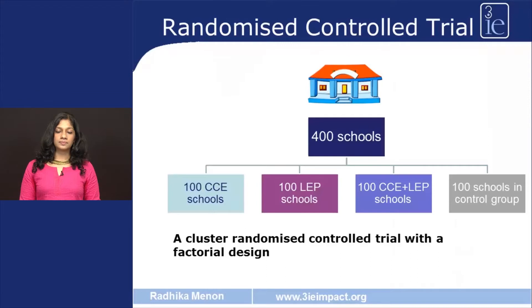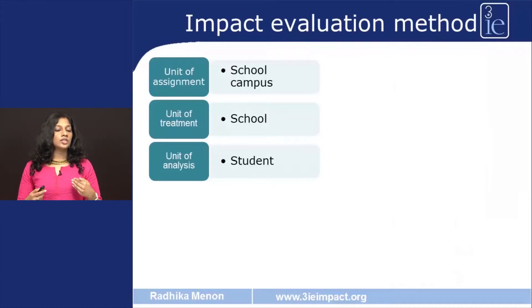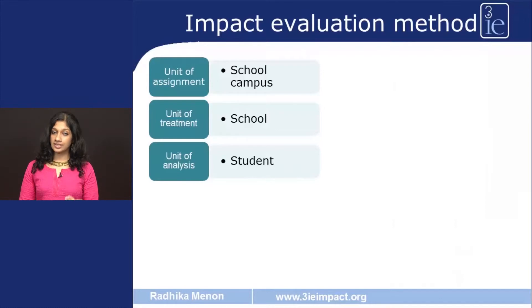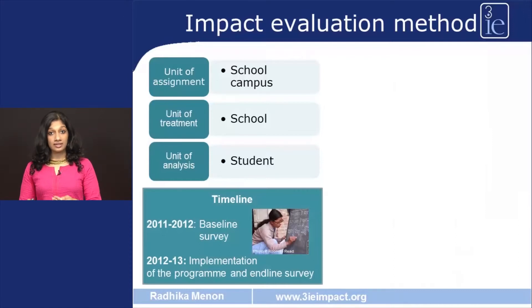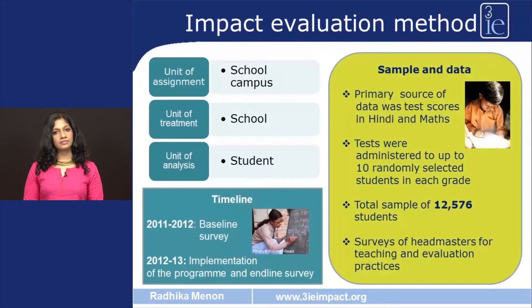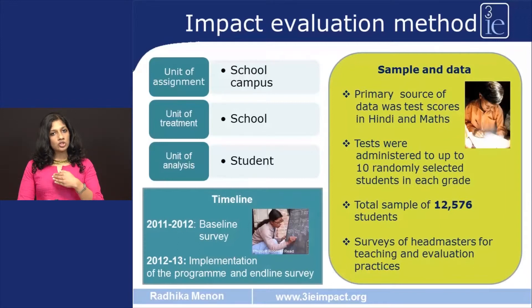The unit of assignment was the school campus — many schools in Haryana share playgrounds and primary school teachers sometimes report to principals of secondary schools. The unit of treatment was the school, and the unit of analysis was the student, since test scores of individual students were used. The baseline survey was conducted in the academic year 2011-12, and the program was implemented with the endline survey conducted in 2012-13. The primary source of data was test scores in Hindi and Maths, with 10 randomly selected students tested in each grade, yielding a total sample of 12,576 students. The evaluation also included surveys of headmasters to collect information on teaching and evaluation practices.